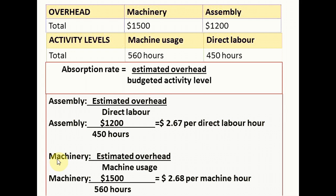To calculate the absorption rate for the machinery department, we take the estimated overhead cost of 1500 and divide that by machine usage hours, which is 560 hours. We use machine hours because machine hours are used to allocate overhead costs to work-in-process inventory in mechanized production. So 1500 divided by 560 machine usage hours gives an absorption rate of $2.68 per machine hour. We have now calculated the absorption rate for both departments.